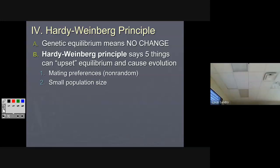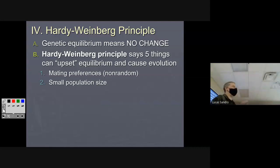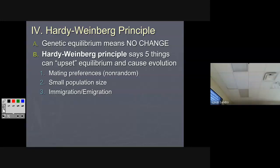Number two: small populations evolve faster than big ones — the phenomenon called genetic drift. If there aren't very many individuals in the population, just them being born and dying is going to change the gene pool significantly. Number three: individuals moving in and out of the population — that changes the gene pool and counts as evolution.